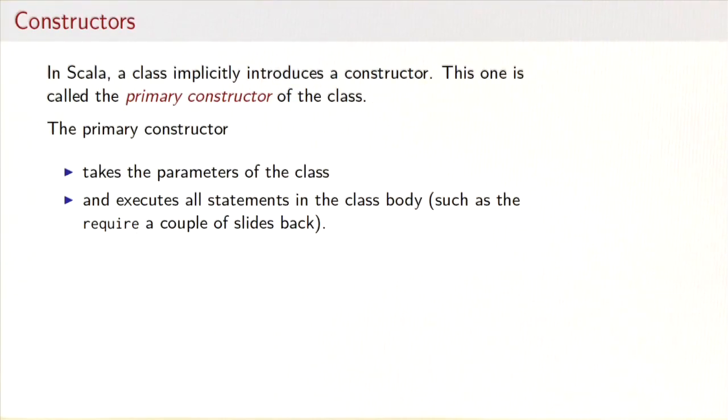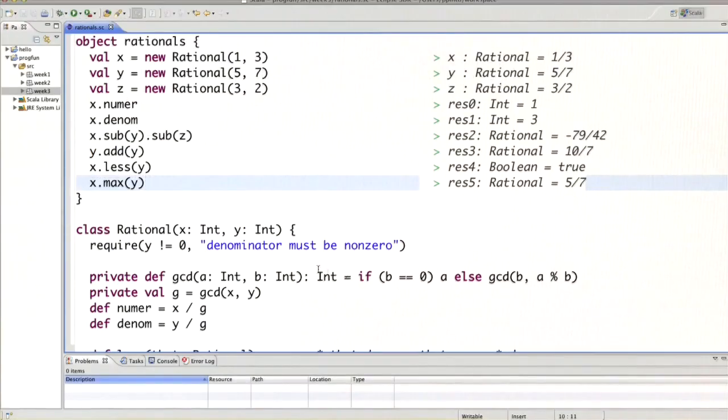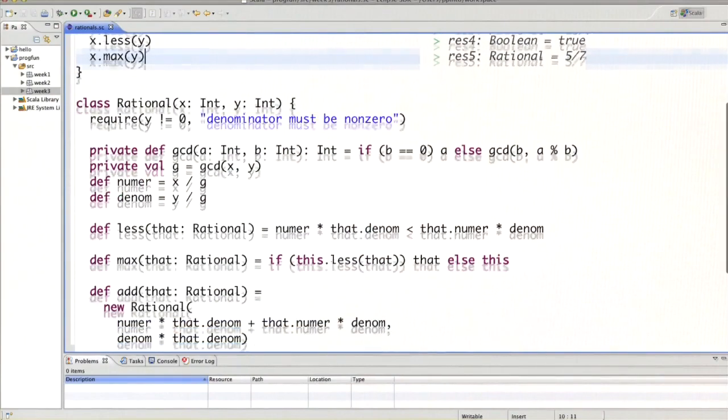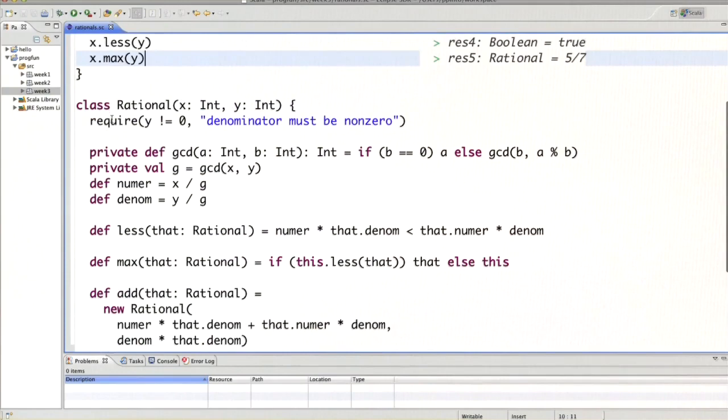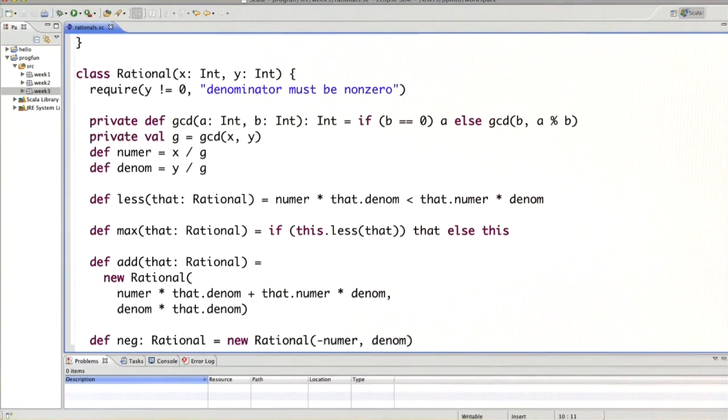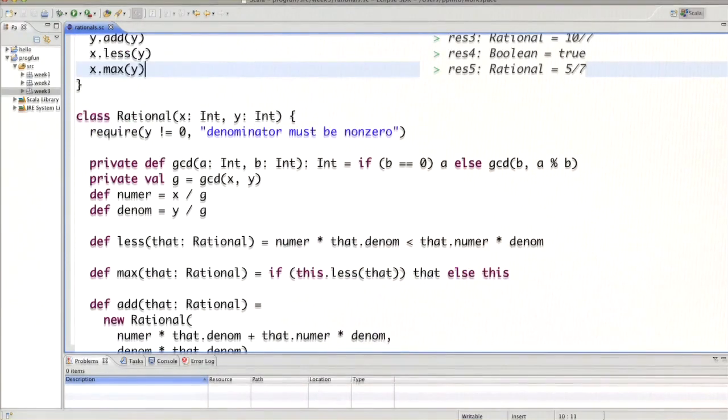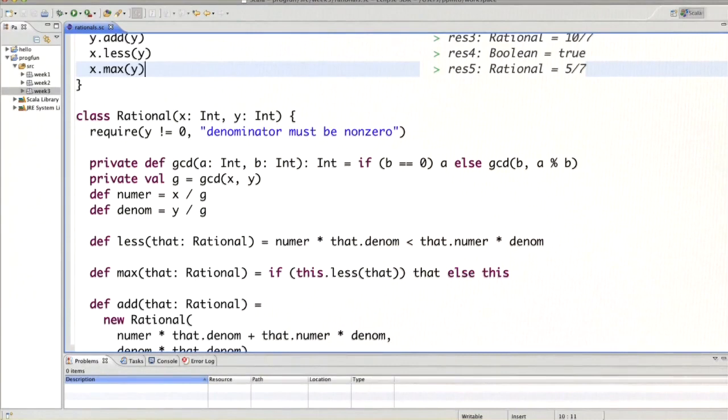Another syntactic construct we are going to cover is constructors. In fact, in Scala every class already implicitly introduces a constructor which is called the primary constructor of the class. That primary constructor simply takes the parameters of the class and executes all statements in the class body. So for instance the constructor of class rational would take the x and y as the parameter and then execute the class body. So that means it would execute the require, it would execute the value definition here, and for the defs there's nothing to execute.